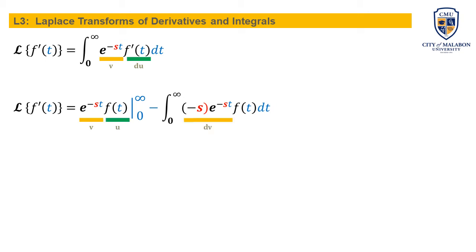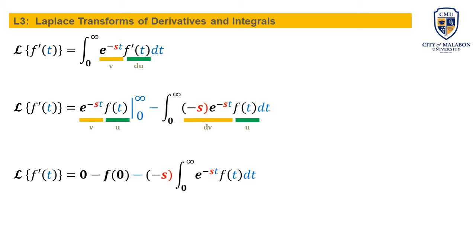Simplifying the integration by parts result: evaluating at infinity gives zero, and evaluating at zero leaves positive f of zero. We then factor out the constant negative s from the integral. The remaining integral from zero to infinity of e to the minus s t times f of t is, by definition, our F of s.